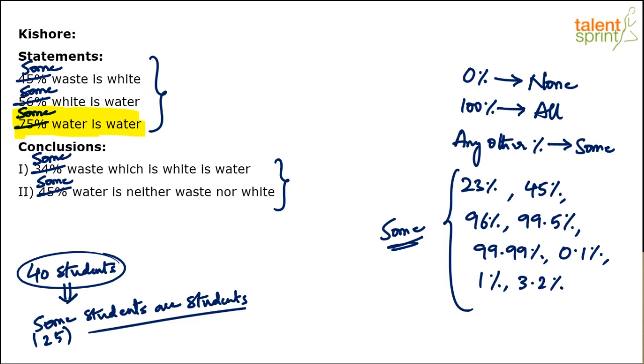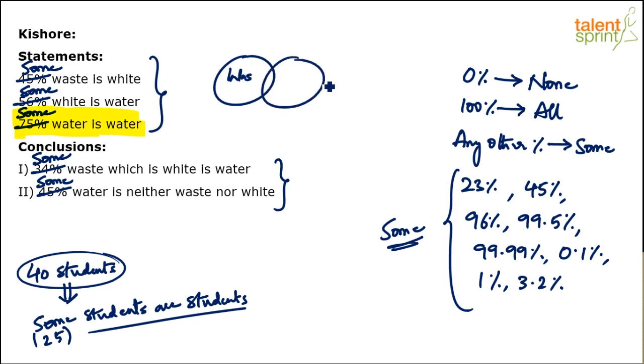Draw the basic diagram as usual. 'Some waste is white' — let's say this is the waste circle, and the overlapping region shows that some waste is white. Next, 'some white is water' — some white is water.